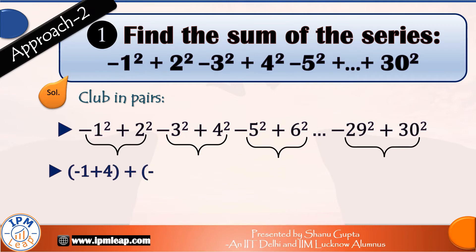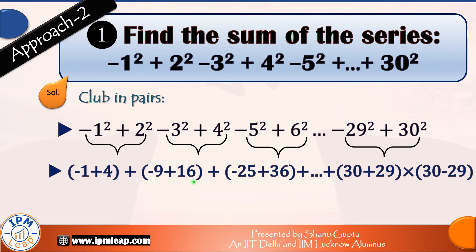Calculating the value of each pair: minus 1 plus 4 is equal to 3, minus 9 plus 16 is equal to 7, minus 25 plus 36 is equal to 11, and so on.